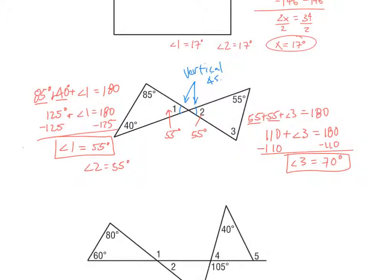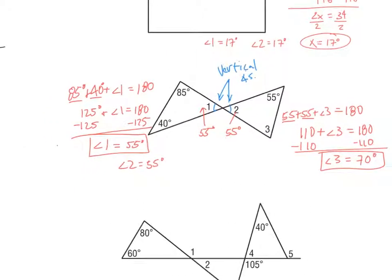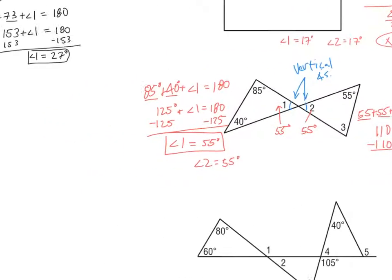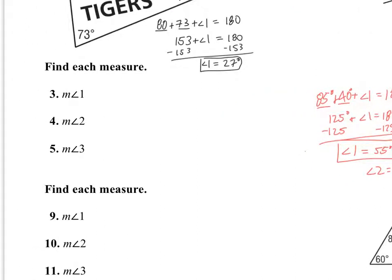We just have to set up equations and identify how to set them up based on the picture. Both of those angles were 55 degrees and angle 3 was 70 degrees.